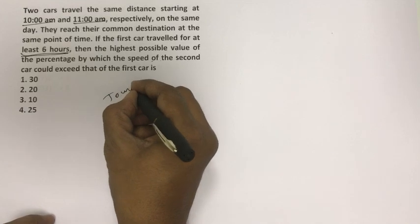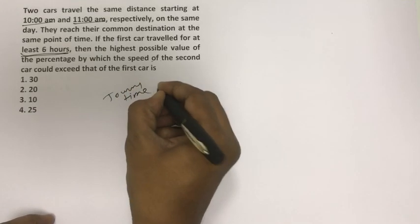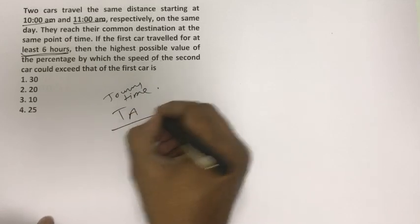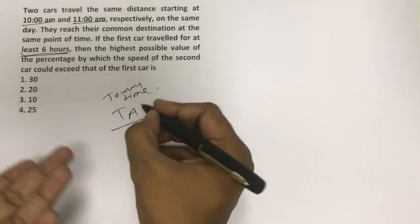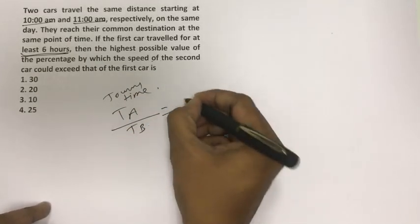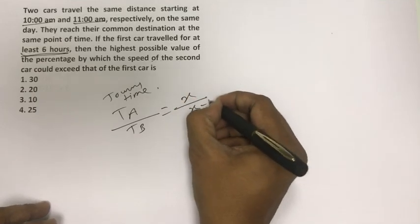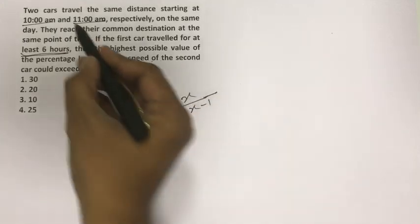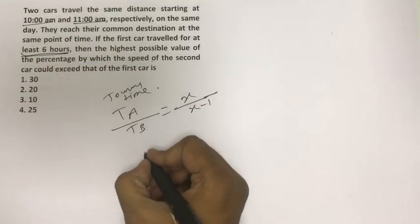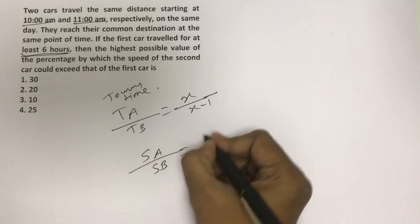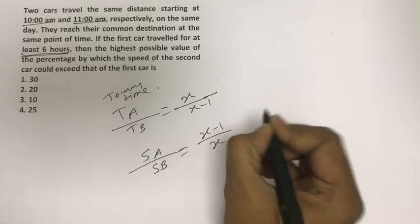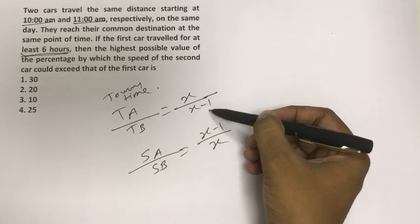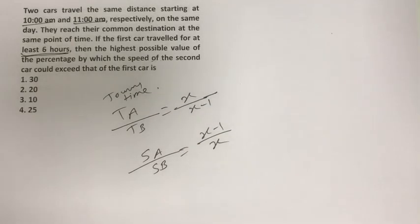If I talk about the journey time, then the time taken by A (first car) and B (second car) is in the ratio of x upon x-1, because 1 hour is less for the 11:00 car. So, the speed of A upon the speed of B will be x-1 upon x, because speed is inversely proportional to time.